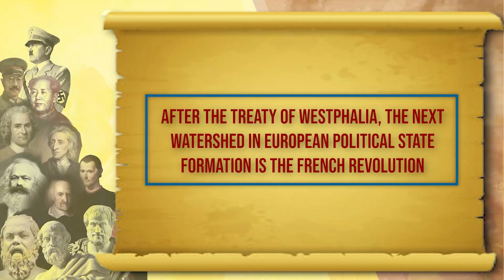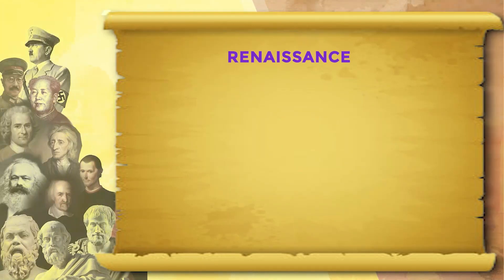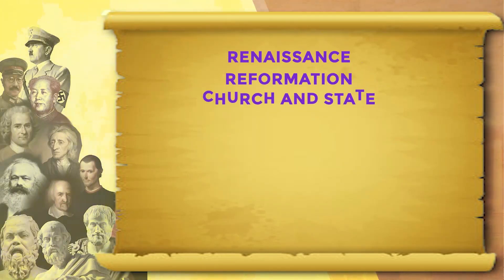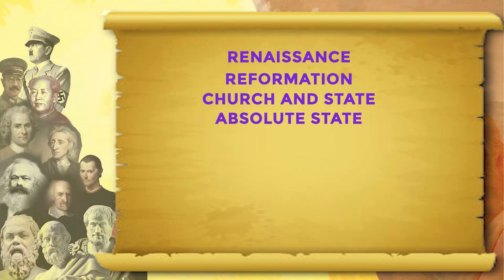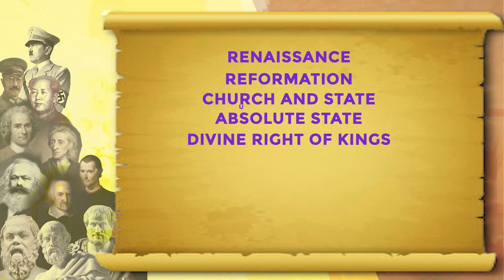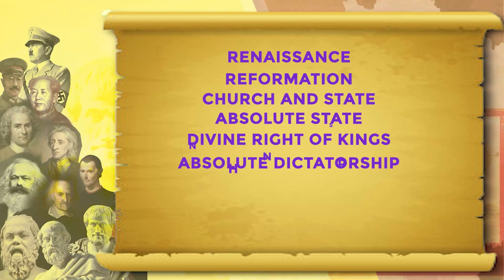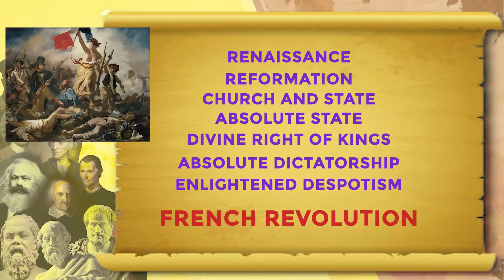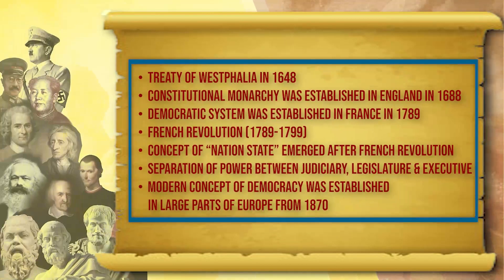After the Treaty of Westphalia, the next great watershed in European political state formation is the French Revolution. After the French Revolution and the Renaissance Reformation — the conflict between church and state, absolute state, divine right of kings, absolute dictatorship, enlightened despotism — we come to the French Revolution, after which another important concept arises: the concept of the nation state.